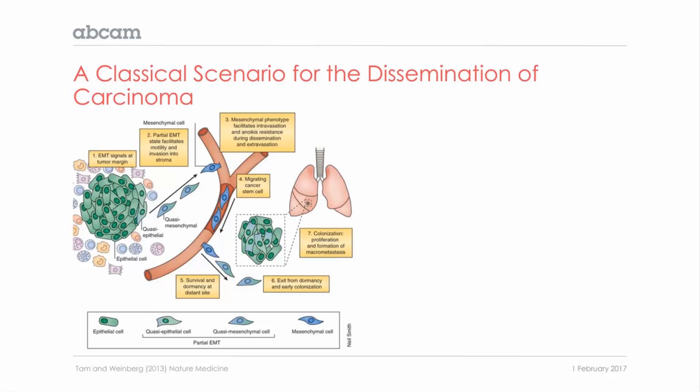EMT could occur within the tumor, near a blood vessel perhaps, or near stromal cells like macrophages, that can send EMT-inducing signals. Once cells have acquired a mesenchymal-like phenotype, they acquire invasive properties which facilitate their invasion into the stroma. They can finally reach tiny blood vessels in or near the tumor, intravasate and circulate — at this stage we call these cells circulating tumor cells — and finally exit at a secondary site where they could potentially form a secondary tumor.